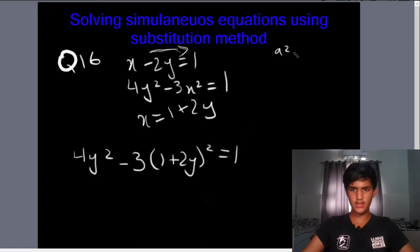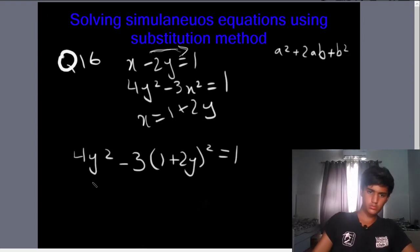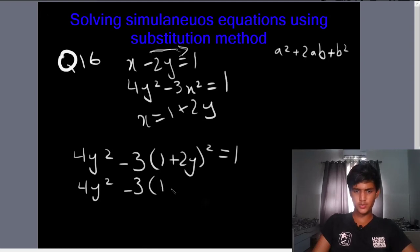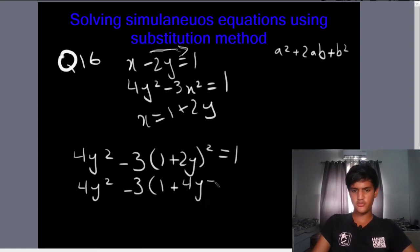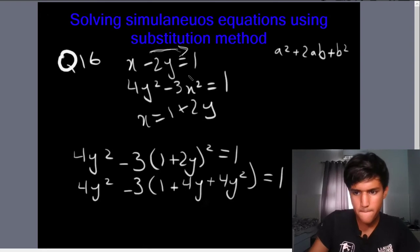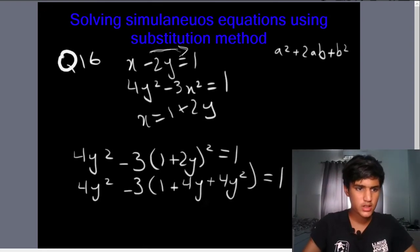We are going to open this bracket using the formula (a + b)² = a² + 2ab + b². So we get: 4y squared minus 3 times [1 squared, which is 1, plus 2 times 1 times 2y, which is 4y, plus (2y) squared, which is 4y squared] is equal to 1.